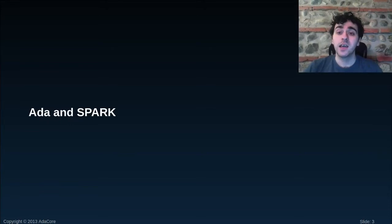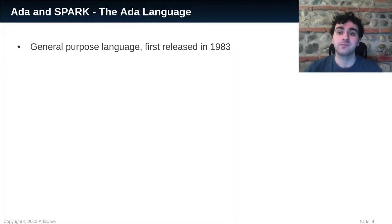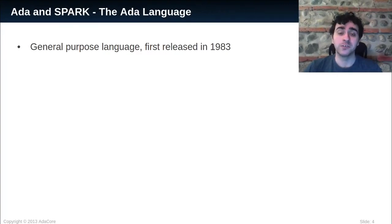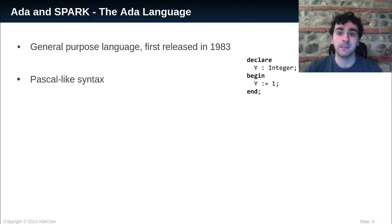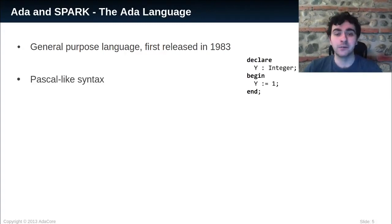First, I will talk about the Ada and Spark languages. Ada is a general-purpose language. It's quite old — it was first released in 1983. It has a Pascal-like syntax where declarations and instructions are separated.